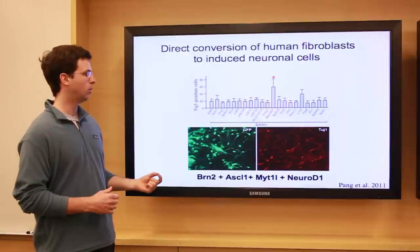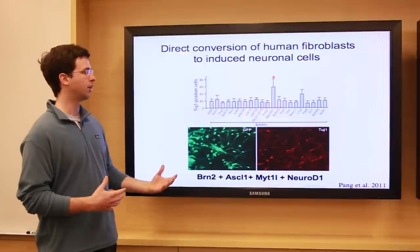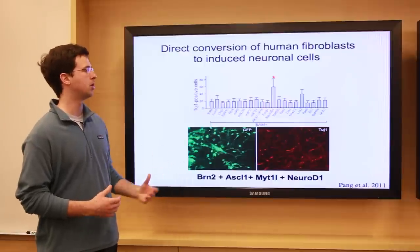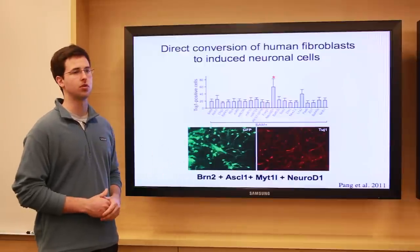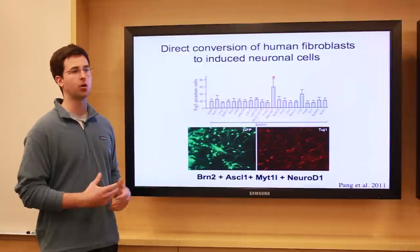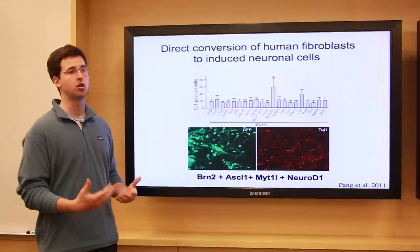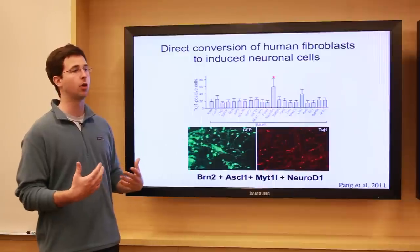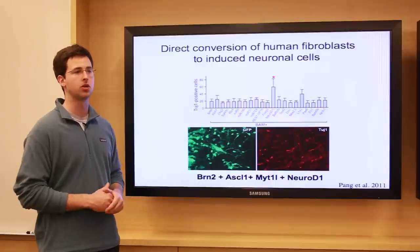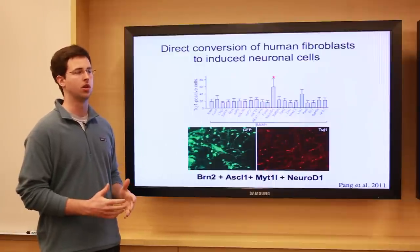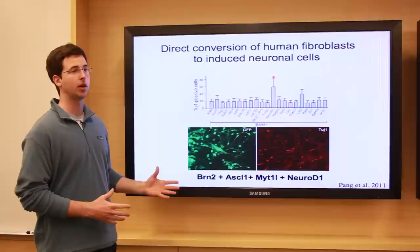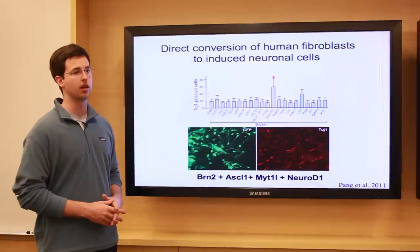It was really important to see that we could do this with human cells and not just mouse cells. This is the first step towards being able to use this to model human neurodegenerative or neurological disorders in a dish without involving a pluripotent state.